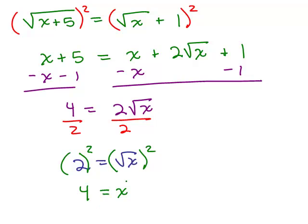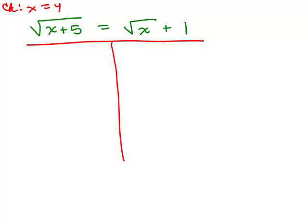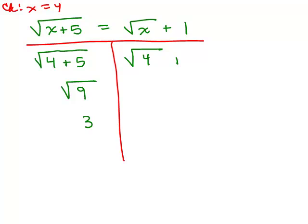It looks like x equals 4, and of course we want to verify that's correct by checking our answer. Plugging in 4 for x: on the left-hand side, we simplify under the radical — 4 plus 5 is 9, and square root of 9 is 3. On the right-hand side, square root of 4 is 2, plus 1 equals 3. Both sides equal 3, so yes, x equals 4 is the correct solution.